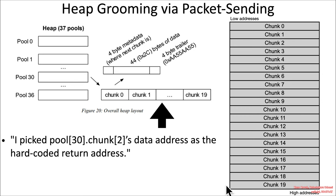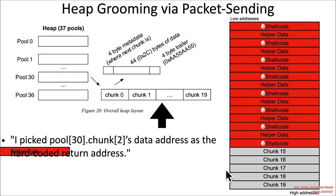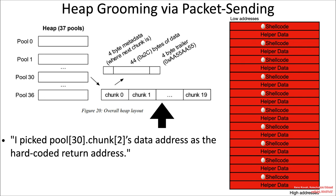In a typical heap diagram with low addresses at the bottom and high at the top, there are 20 chunks. To groom this heap, it's simply a matter of sending a bunch of Bluetooth packets, each landing into pool 30 for allocations of this particular size. She chose to alternate shellcode with helper data, shellcode with helper data, because she couldn't fit all of the shellcode within just the 0x2C bytes. The shellcode makes reference to data on the adjacent packet.